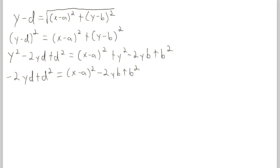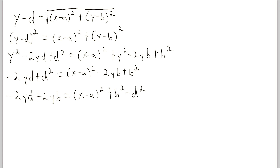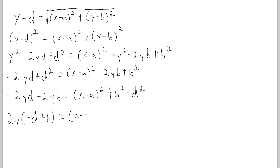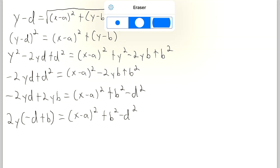We're trying to get y by itself. So we subtract d squared from both sides and add 2yb to both sides. We get: negative 2yd plus 2yb equals (x minus a) squared plus b squared minus d squared. Looking at the left side, we've got a 2y in both terms, so we factor those out: 2y times (b minus d) equals (x minus a) squared plus b squared minus d squared.